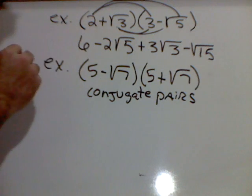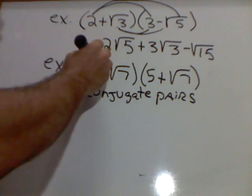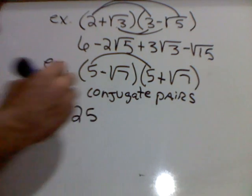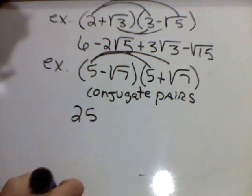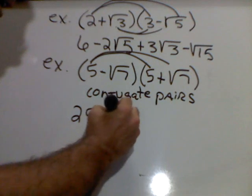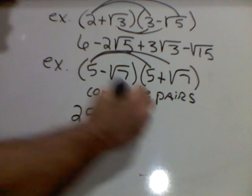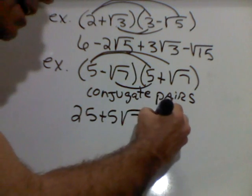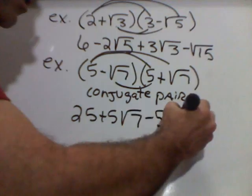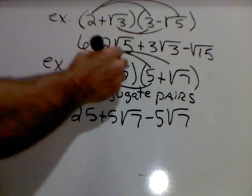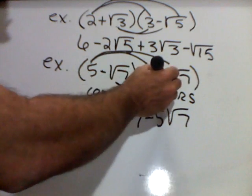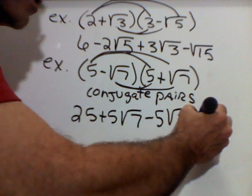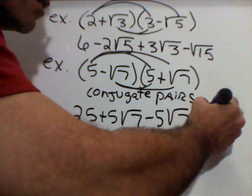Now, watch what happens when I multiply conjugate pairs. 5 times 5 is 25. 5 times square root of 7 is 5 square root of 7's. Negative square root of 7 times 5 is a negative 5 square root of 7. And then finally, negative times positive square root of 7 times square root of 7 is just a negative 7.